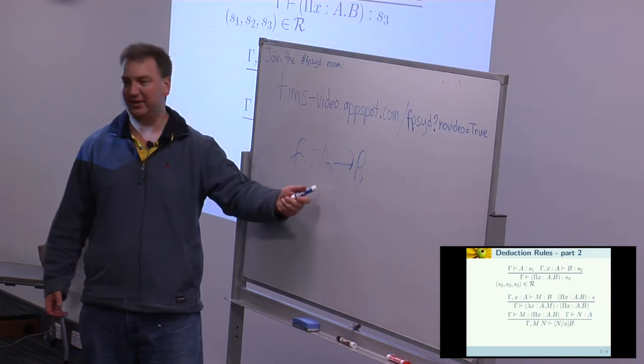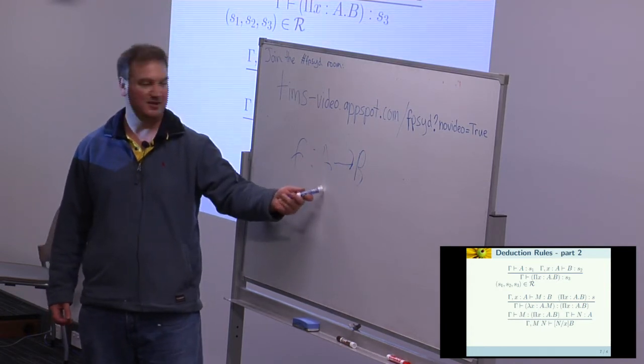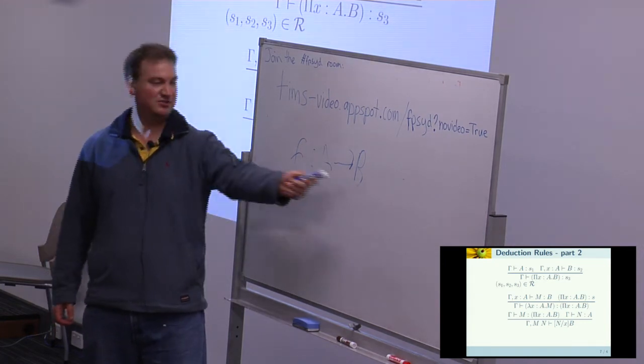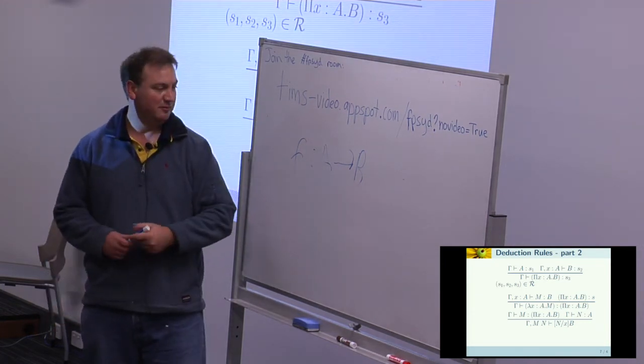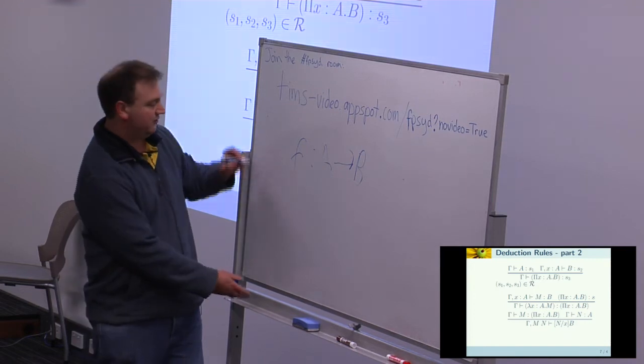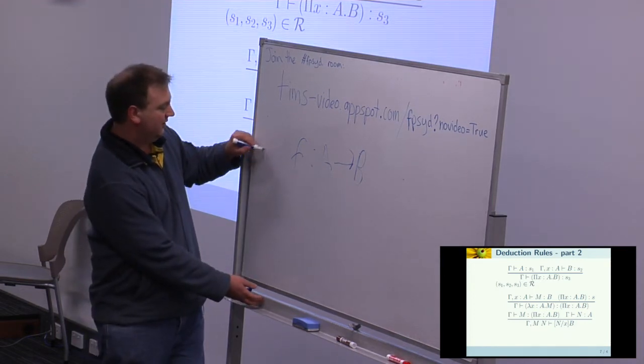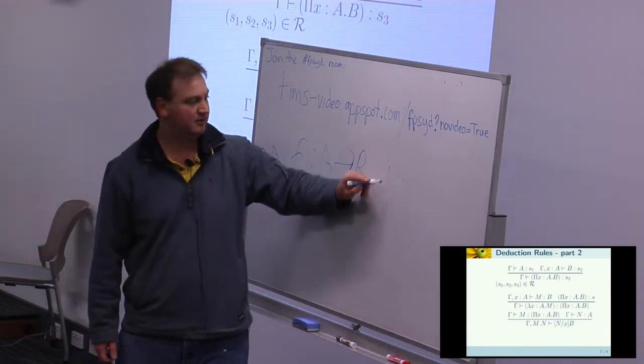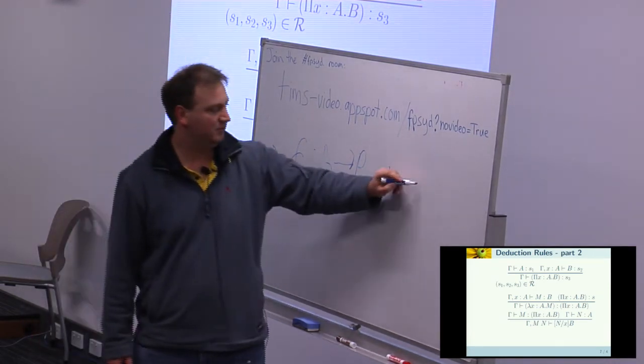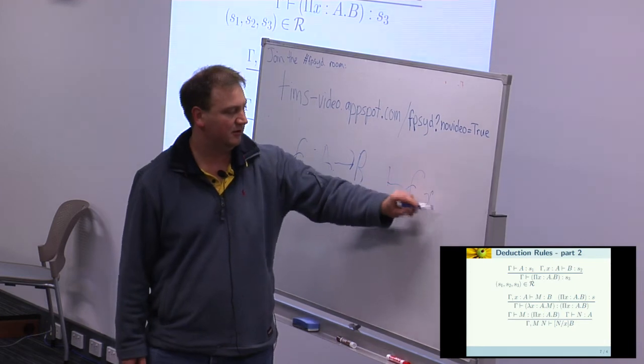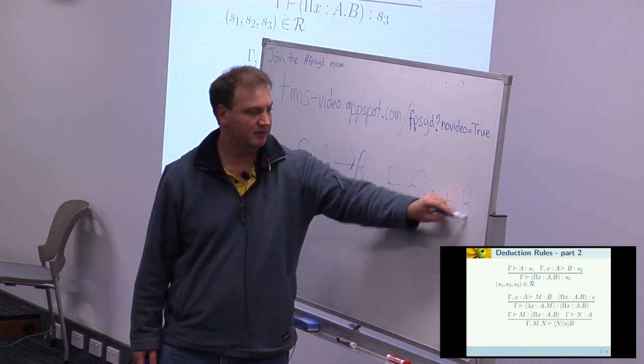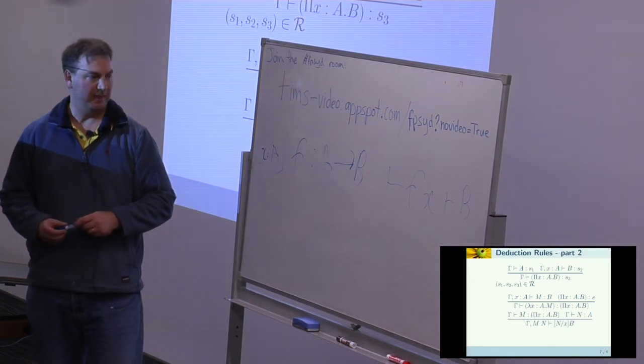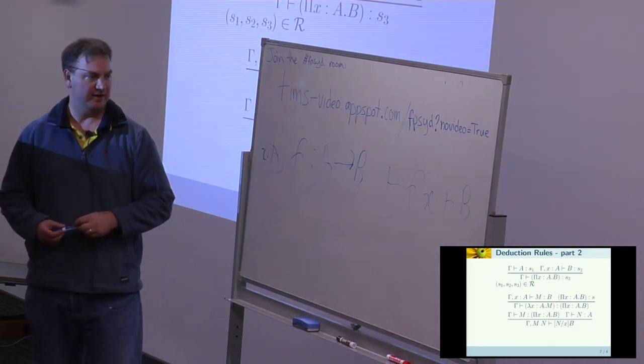If I've got a proof of A, basically an object of type A, taken as proof of A, then with F, I can turn this into a proof of B. So if I've got that and I've also got, say, X is a proof of A, then together, you should be able to put them together, and you've got a proof of B.